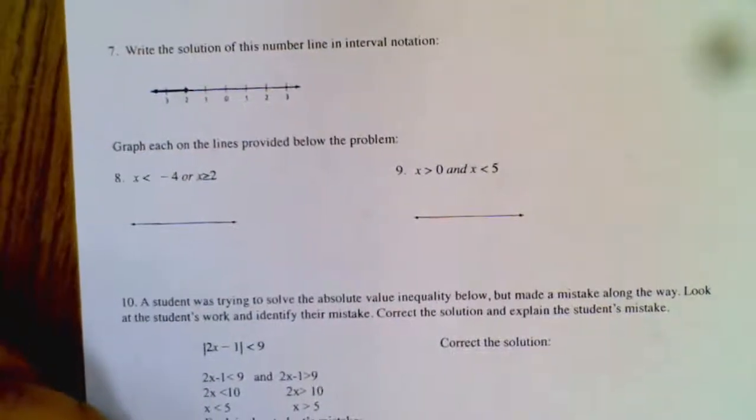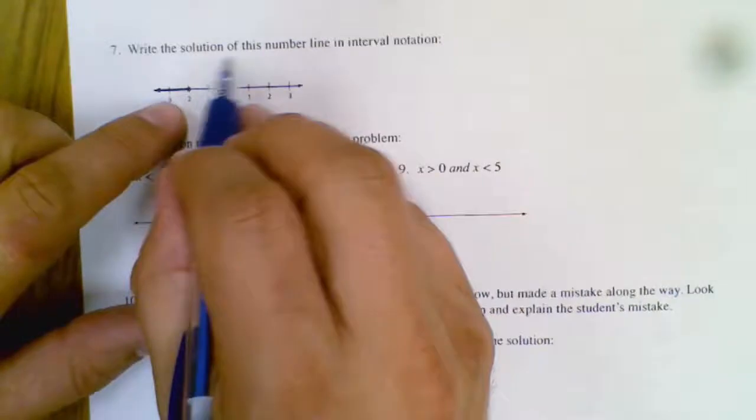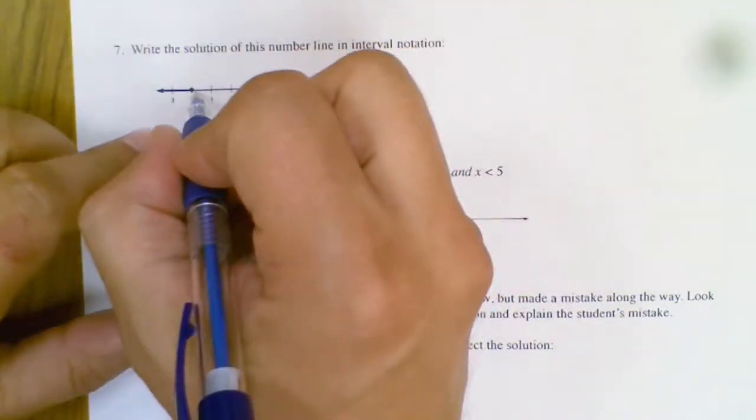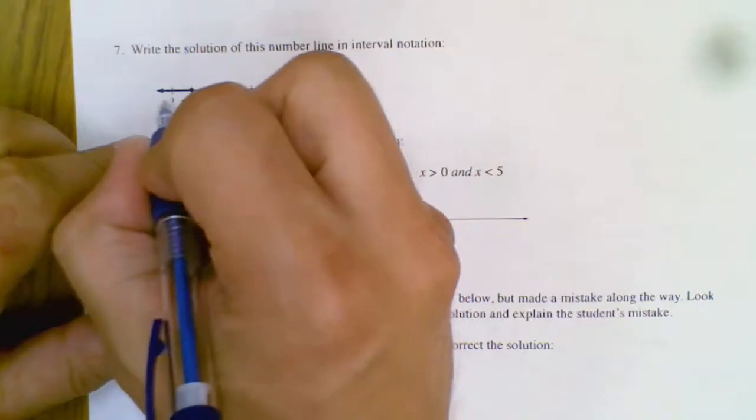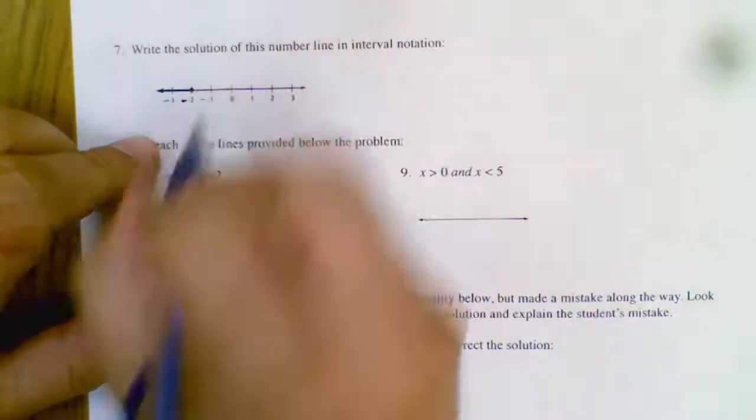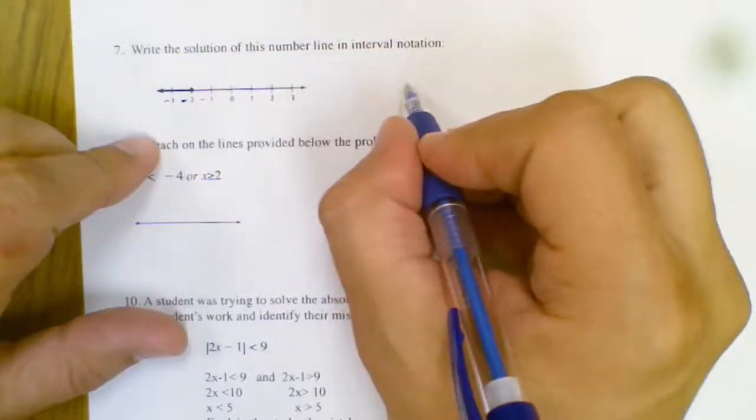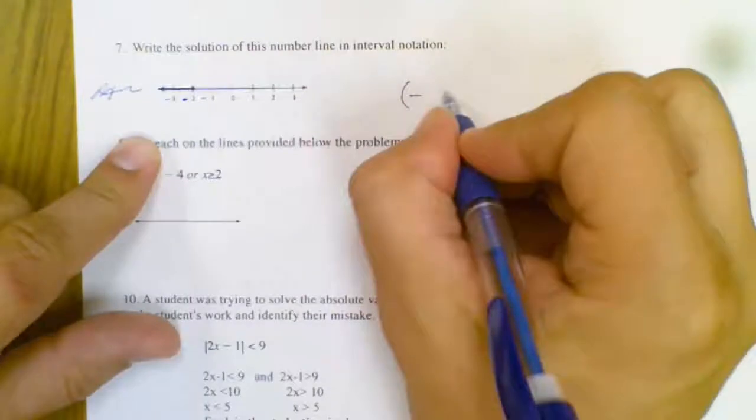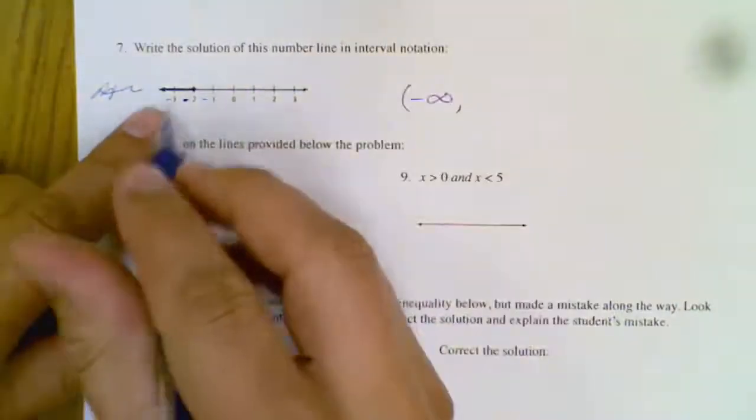Write the solution of this number line in interval notation. So to me that looks like all the x's smaller than negative 2. Hopefully you can see those are negatives there, the printing didn't come out great. So I know the farthest left this goes, it goes way out here, is negative infinity. I always use a parenthesis on negative infinity.